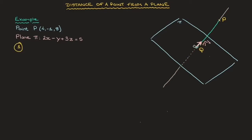Step 2 — find the coordinates of the point of intersection of that line with the plane, that point being Q. Finally, Step 3 — once we have the coordinates of Q, calculate the length of the line segment PQ, which equals the magnitude of the vector PQ. In vector form, a line has equation R = A + λU, where A is the position vector of any point the line passes through, and U is a direction vector for the line.